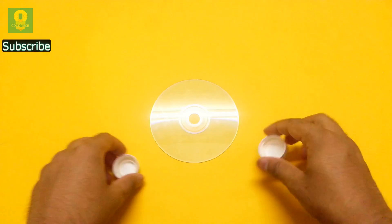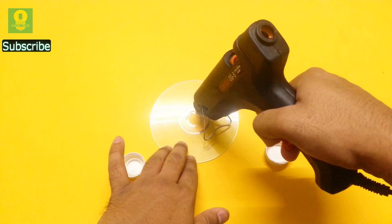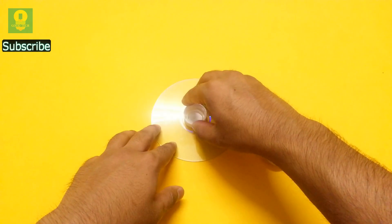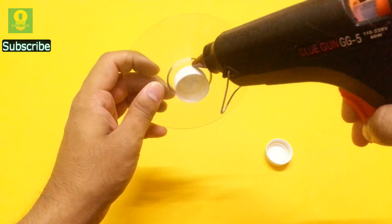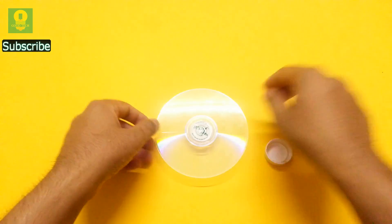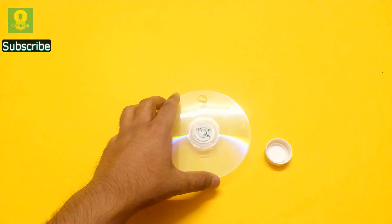Now take two plastic bottle caps. Using hot glue, paste a cap at the center of the CD. Flip the CD and paste another cap on the outer boundary.